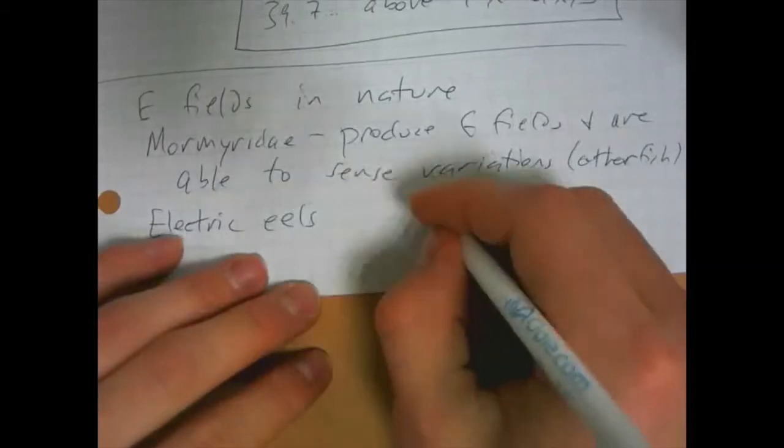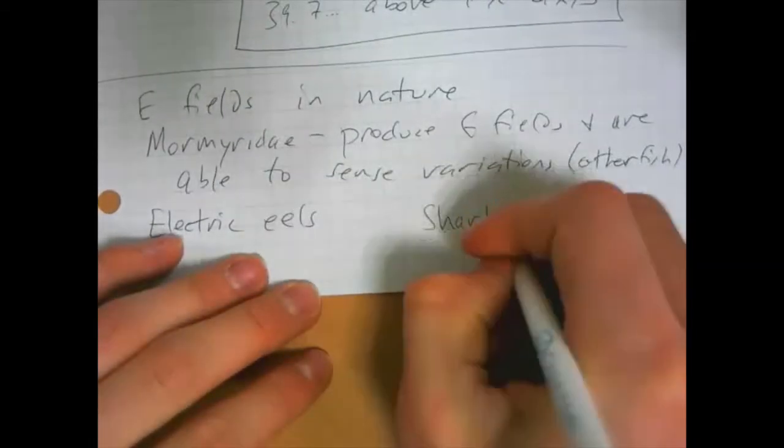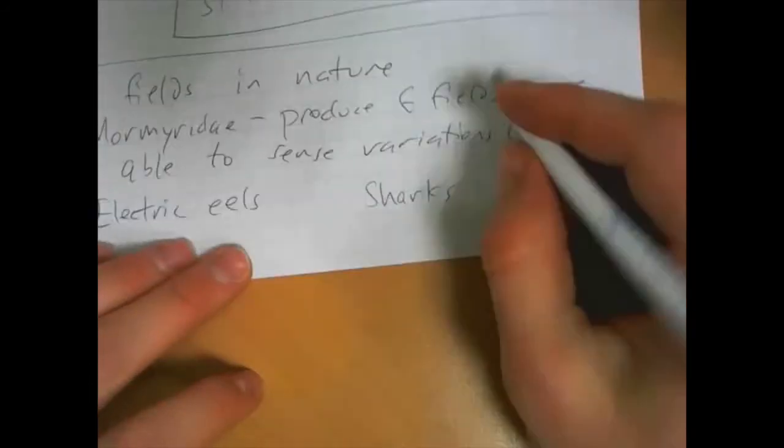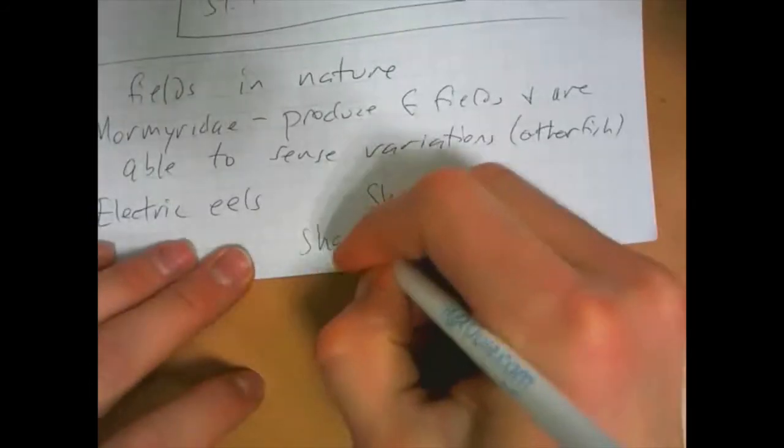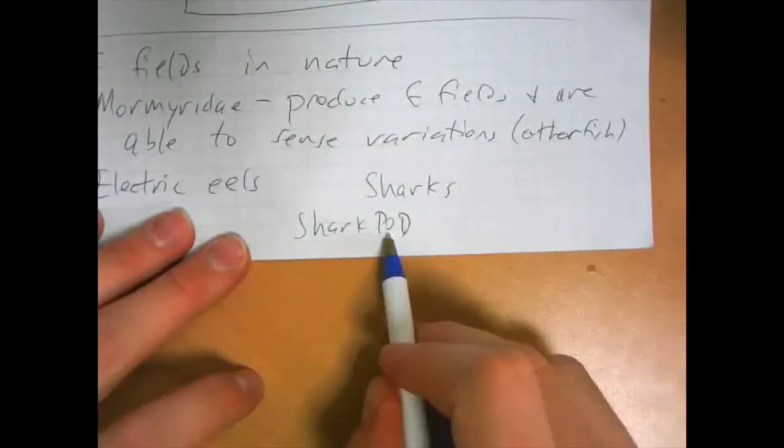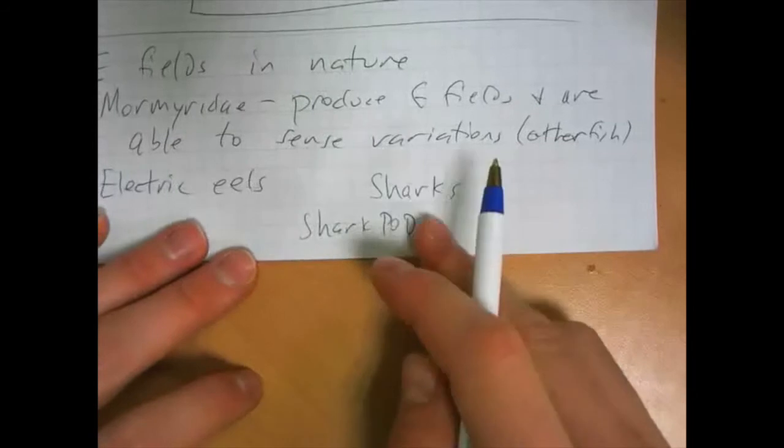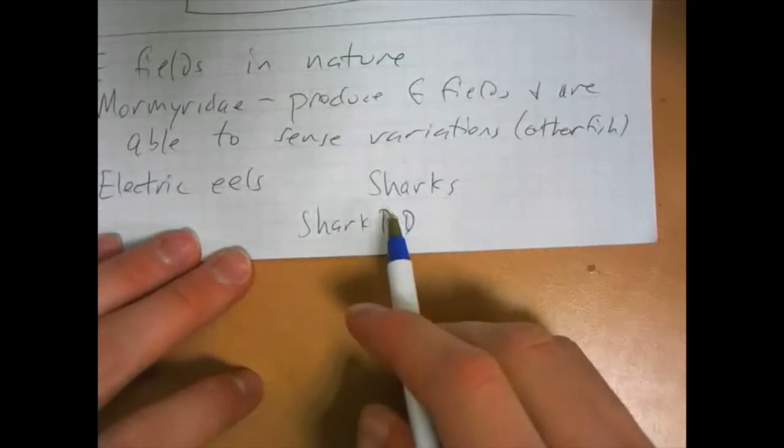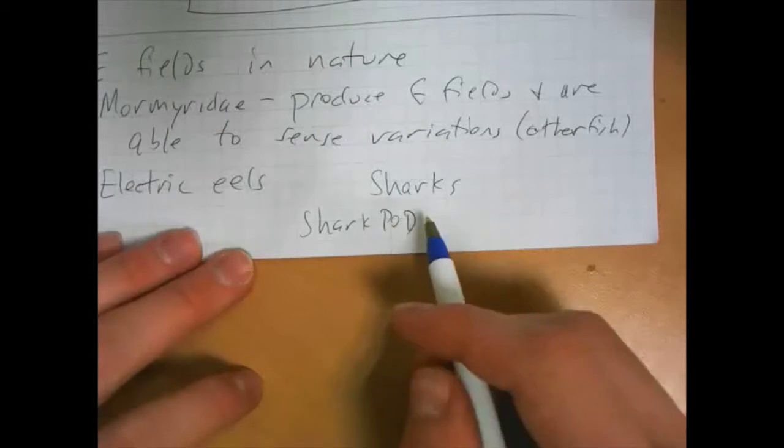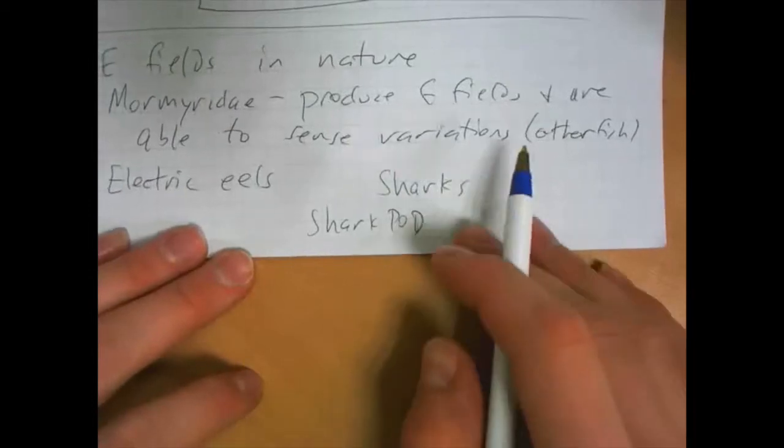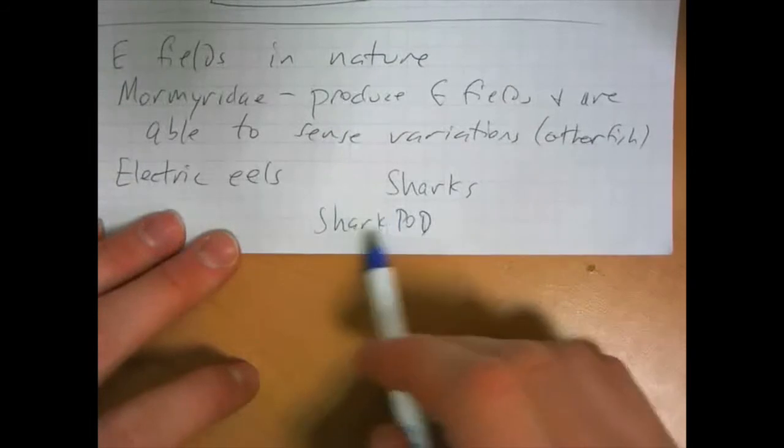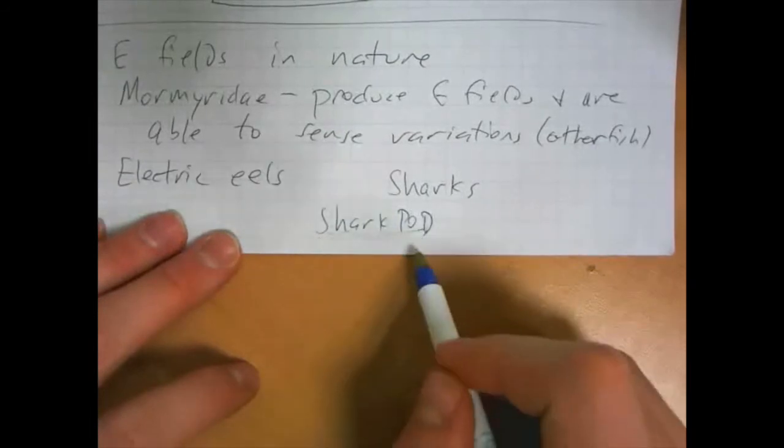Sharks, too, are sensitive to electric fields. And there's a device that somebody created called a shark pod. I think it stands for something, but I don't know what it is. And it generates electric fields so that sharks are kind of scared away. Maybe not scared away, but the electric field makes them not want to be there. And that's often used to protect swimmers and divers from shark attacks.